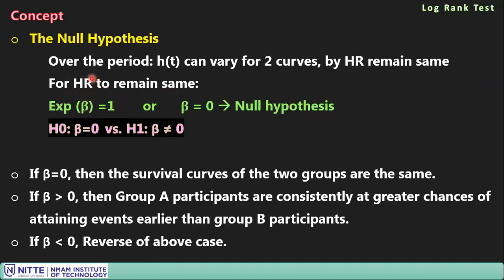If HR = 1, the hazard functions of curves A and B are equal, meaning no difference exists between the two survival curves. This forms the null hypothesis: β = 0, exp(β) = 1, HR = 1, and therefore no statistically significant difference between the two survival curves.